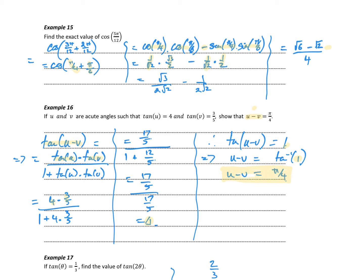So remember that with proofs and show questions, show questions in particular, work with one side only, and then show that the answer, because that question could have easily been evaluate u minus v.